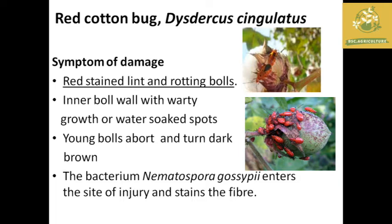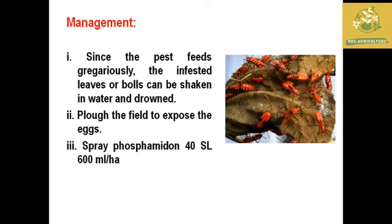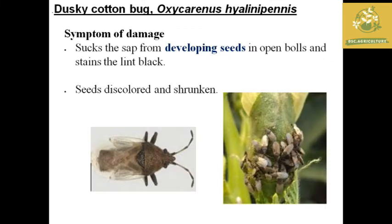The bacteria affects the fiber. Injury causes discoloration of fiber. Chemical control includes Phosphomidon 40 SL at 600 ml per hectare. The Dusky Cotton Bug is closely related with similar symptoms — black color in developing seeds. Seed discoloration, shrinkage, and shedding are observed.